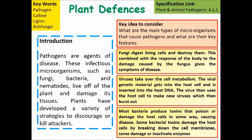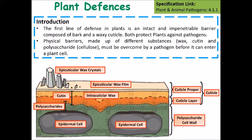The first line of defense that plants have is the physical structure of the leaf — an intact, impermeable barrier composed of bark, a wax cuticle, and underlying wax that will stop pathogens from getting in. These physical barriers are made up of different substances: wax, cutin, and polysaccharides — primarily cellulose — that the pathogen must overcome before it can physically get into the plant and infect it.